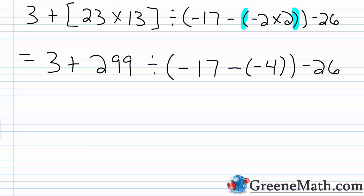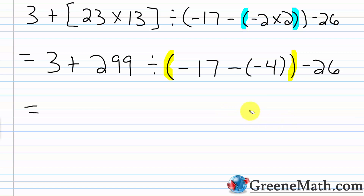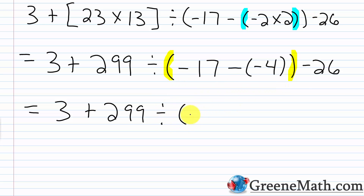Continuing inside of these parentheses, I have negative 17 minus a negative 4, which is the same thing as negative 17 plus a positive 4. What is negative 17 plus 4? The sign is negative, and then I would just do 17 minus 4, which is 13. So that's negative 13. So we'll have 3 plus 299 divided by negative 13, and then minus 26.